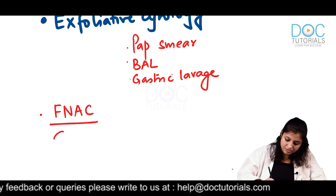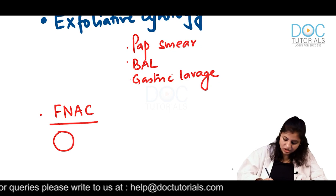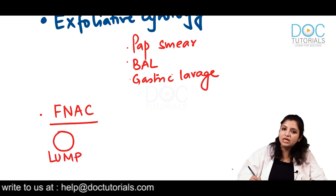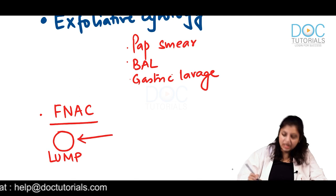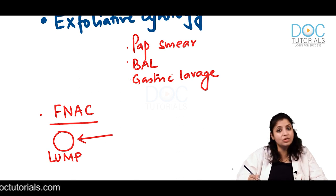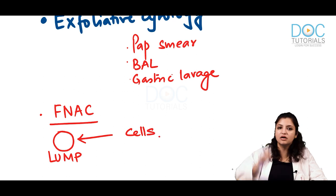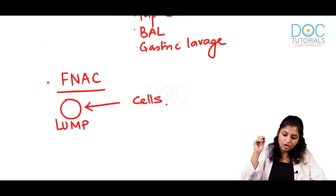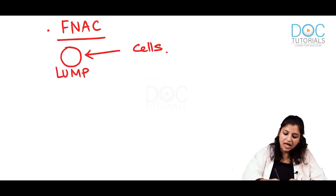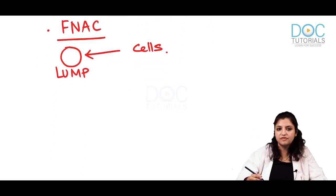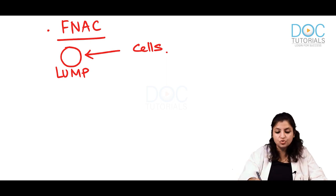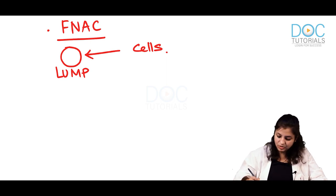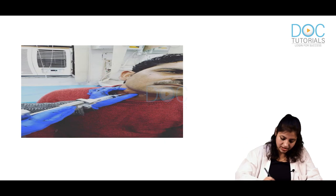Then we can have fine needle aspiration cytology. You do fine needle aspiration cytology when a person has developed a lump. You take out cells from the lump by moving the needle in different directions. There are two basic techniques of FNAC. To understand the two techniques I will show you two videos — you have to spot the difference between them.